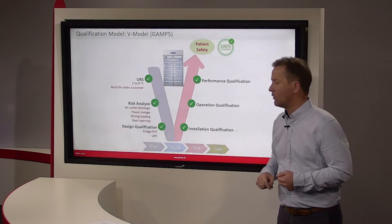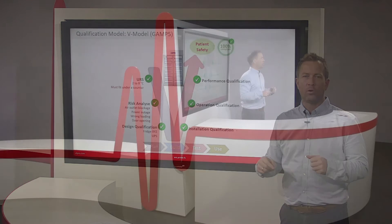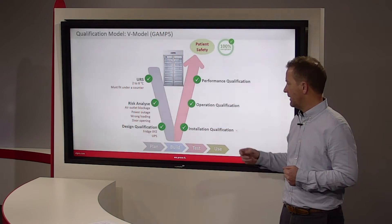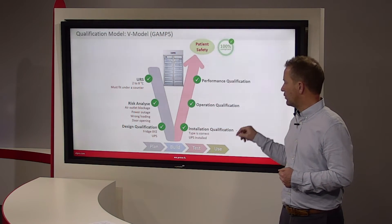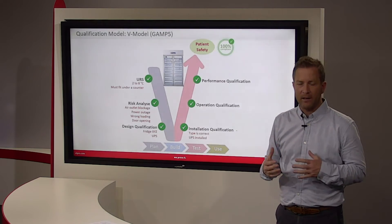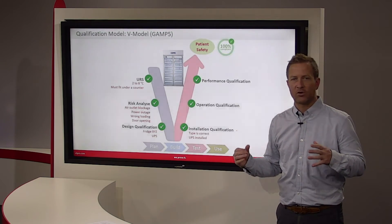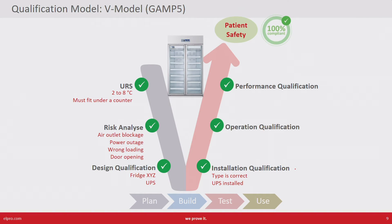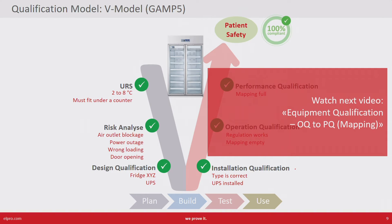In the design qualification you define what type of refrigerator you want to buy and who the producer or manufacturer is. That is also what you check during the installation qualification — essentially verifying that you have purchased the right device and, if applicable, that an uninterrupted power supply has been installed.